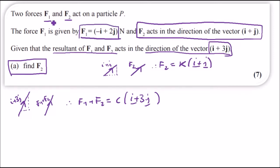So hence replacing f1 we're going to have minus i plus 2j plus f2 which is now ki plus kj and all of this equals to ci plus 3cj.